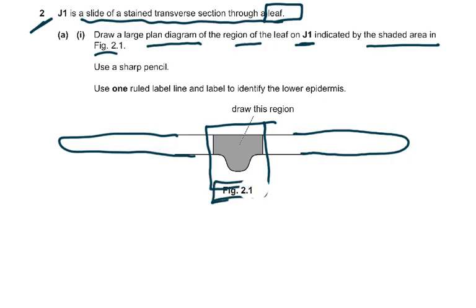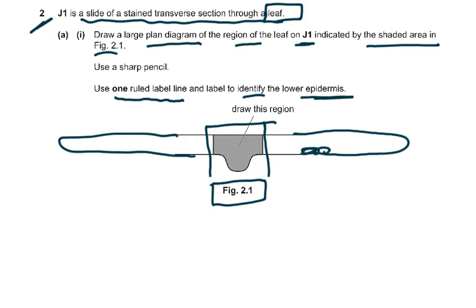Students often say 'I didn't see figure 2.1' — please read the question carefully. Use one ruled label line and label to identify the lower epidermis, which will be the lower part. You have to draw only that much area. The whole leaf was given to you and I'll show you a few slides so you can figure out how to do the plan drawing.